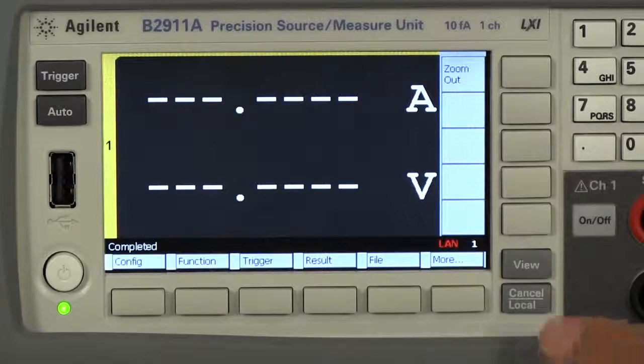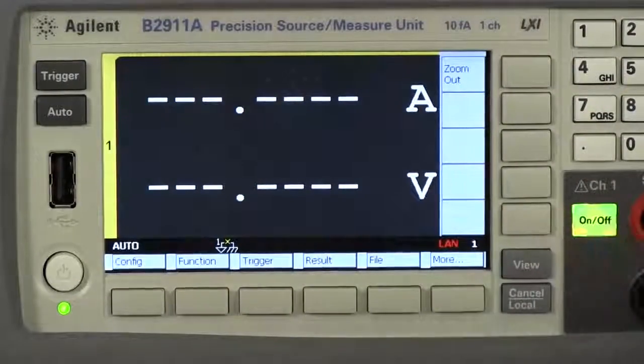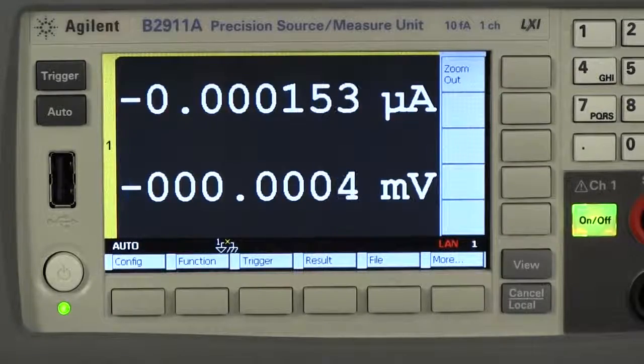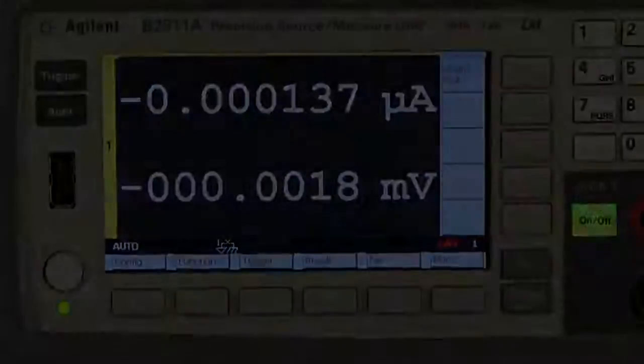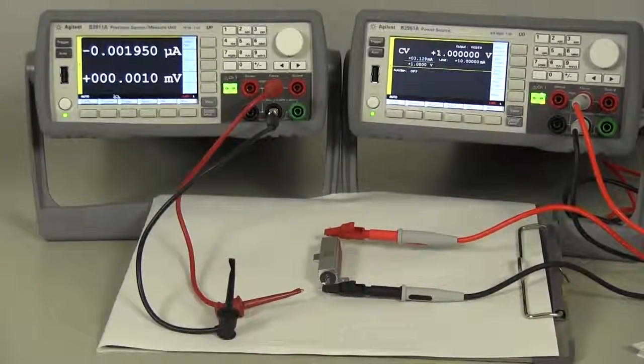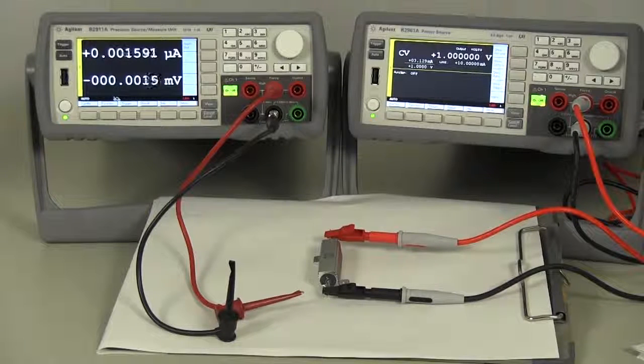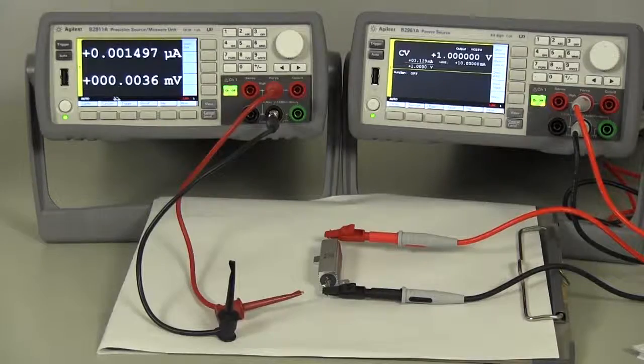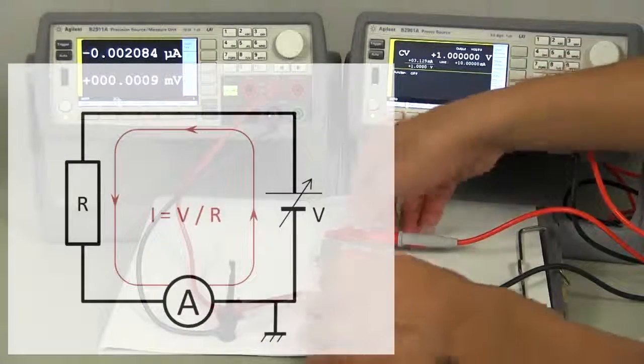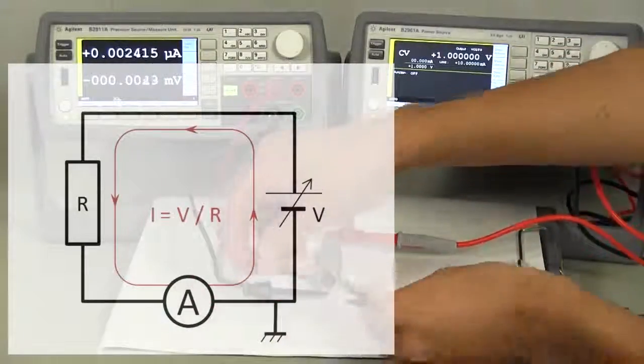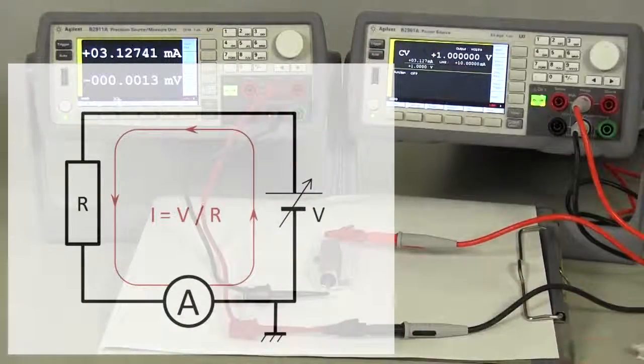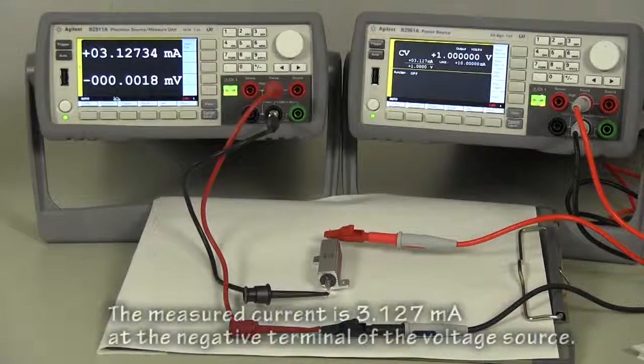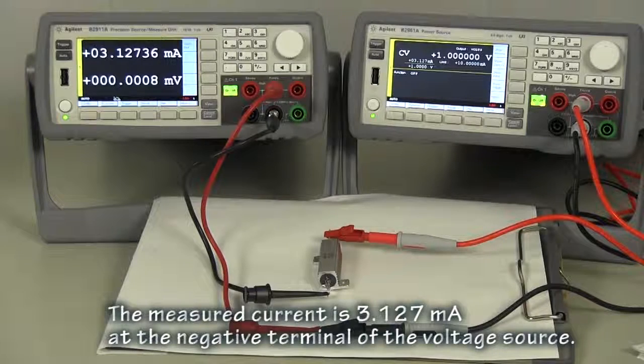Let's start measuring. First, I'm going to connect the SMU to the negative terminal of the DC voltage source. The measured current is about 3.12mA.